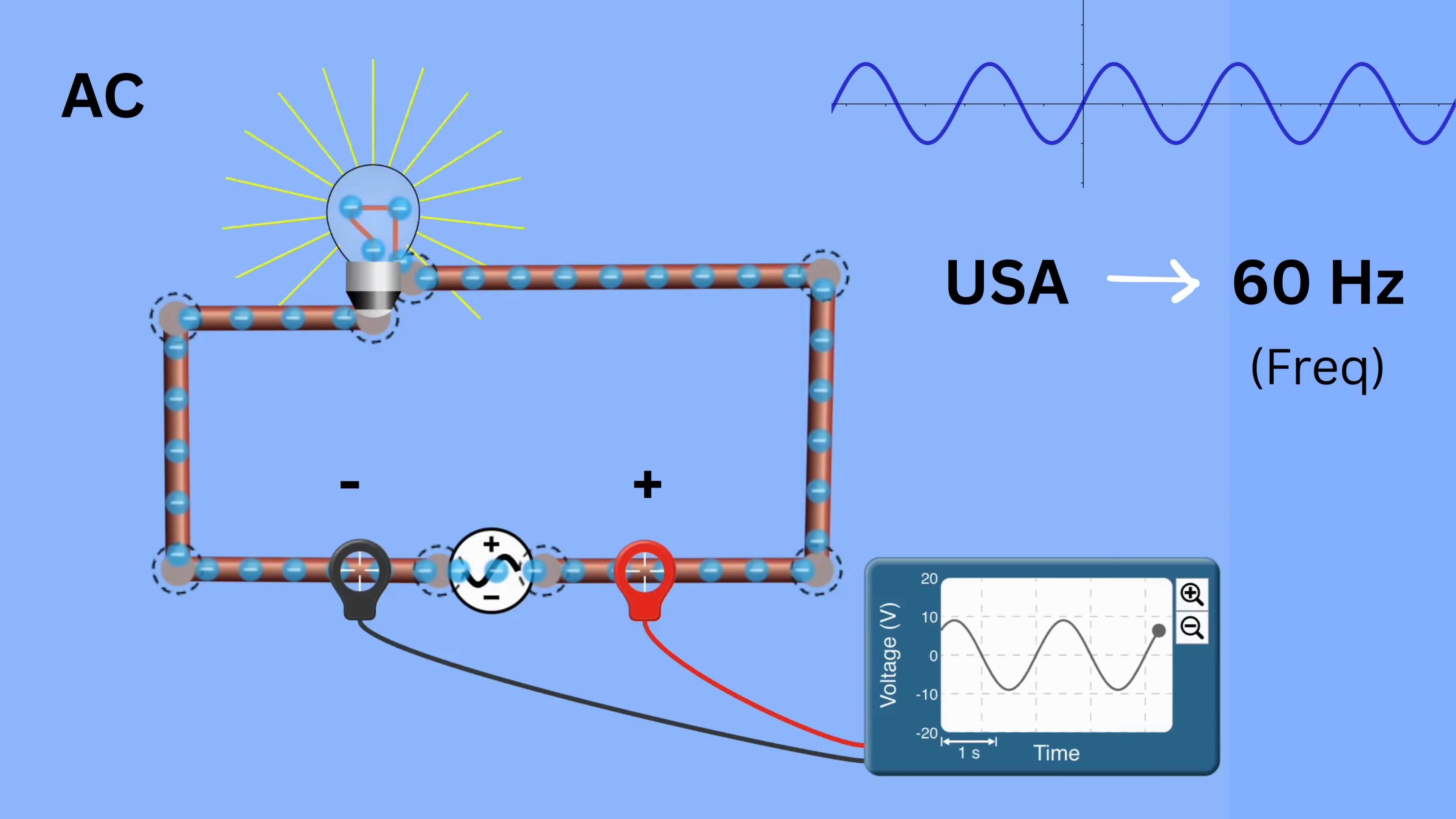As mentioned earlier, current always goes from the positive terminal to the negative terminal. But since the polarity itself is changing, therefore, due to this changing polarity, the direction of current in the circuit also keeps reversing.